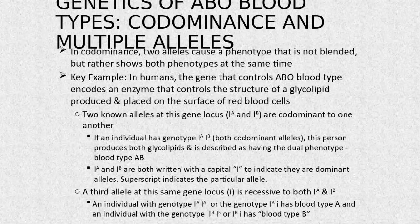Both A and B alleles operate with the capital I notation to indicate they are both dominant alleles.